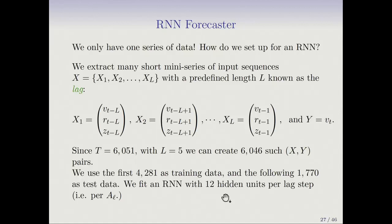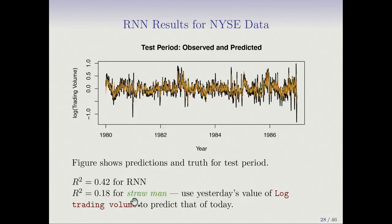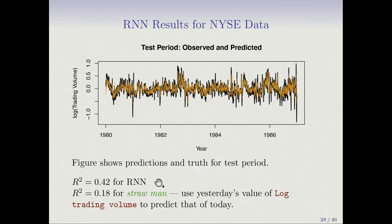We fit a recurrent neural network with 12 hidden units per lag step, so each AL will be a vector of 12 units. Here is a picture of the log trading volume for the test period: the black is observed and the orange is the predicted from the RNN. It looks pretty good — it doesn't quite get the highest peaks or the lowest dips, but it pretty much follows the sequence. The R squared is 0.42 on the test data.